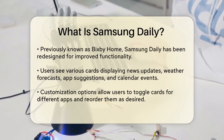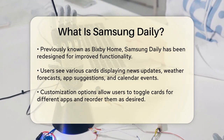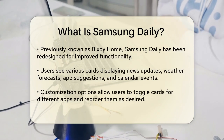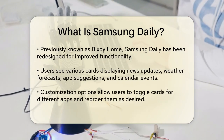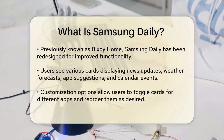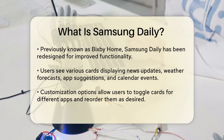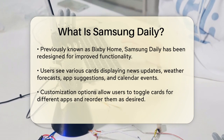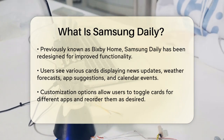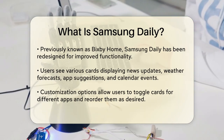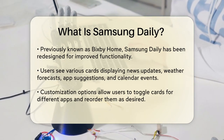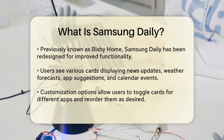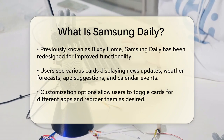To customize Samsung Daily, you simply swipe right from your home screen to access the panel. Then, tap the three-dot menu icon on the middle right side of the screen and select Cards. Here, you can choose which apps you want to see and in what order.